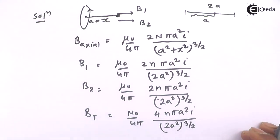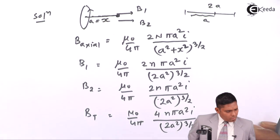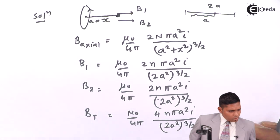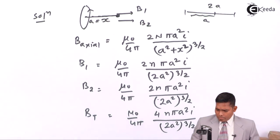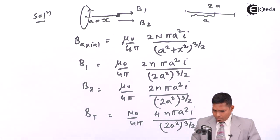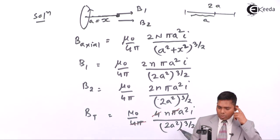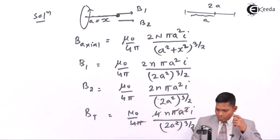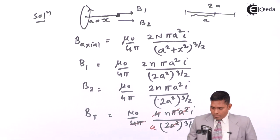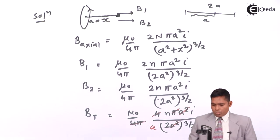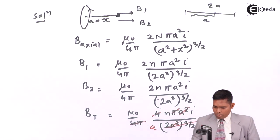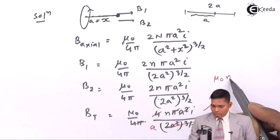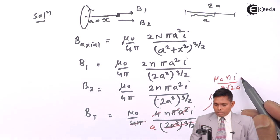Solving and simplifying: the 4π cancels, a² in the numerator with a³ from (a²)^(3/2) in the denominator leaves one factor of a, and (2)^(3/2) equals 2√2. The final answer comes out to be µ₀nI / (2√2 · a). This is the answer to the question.